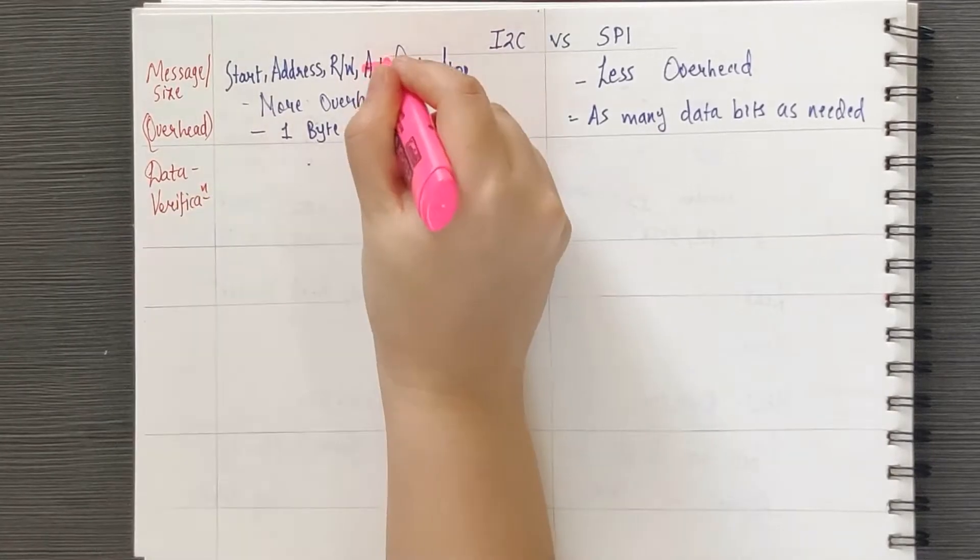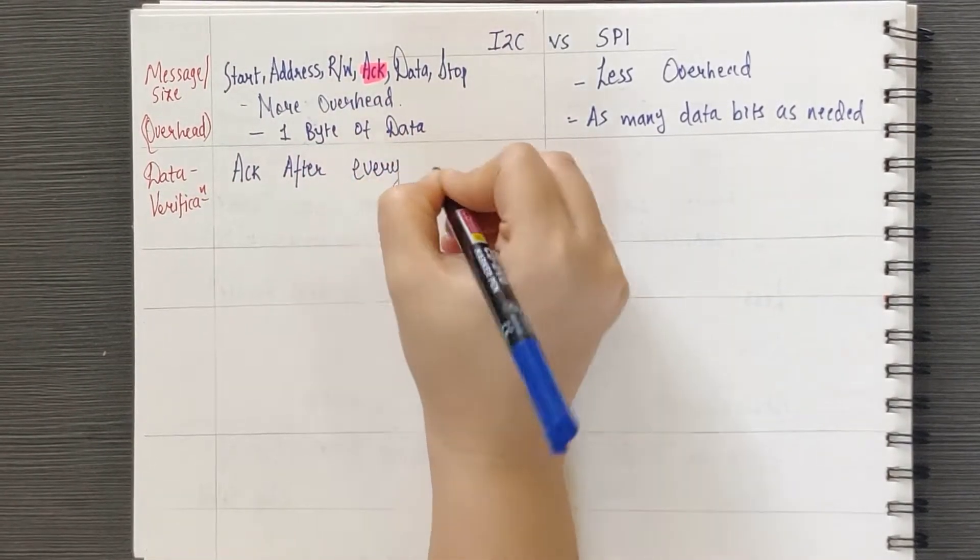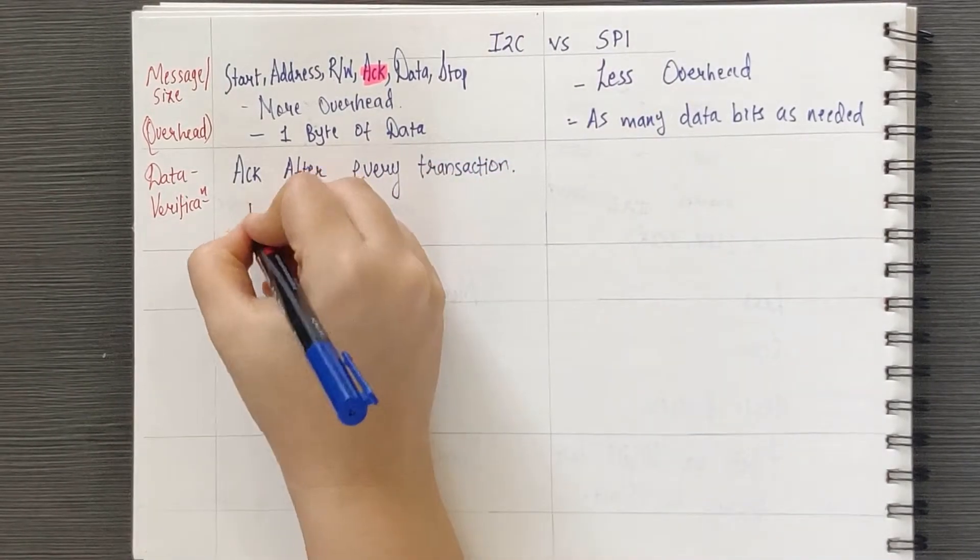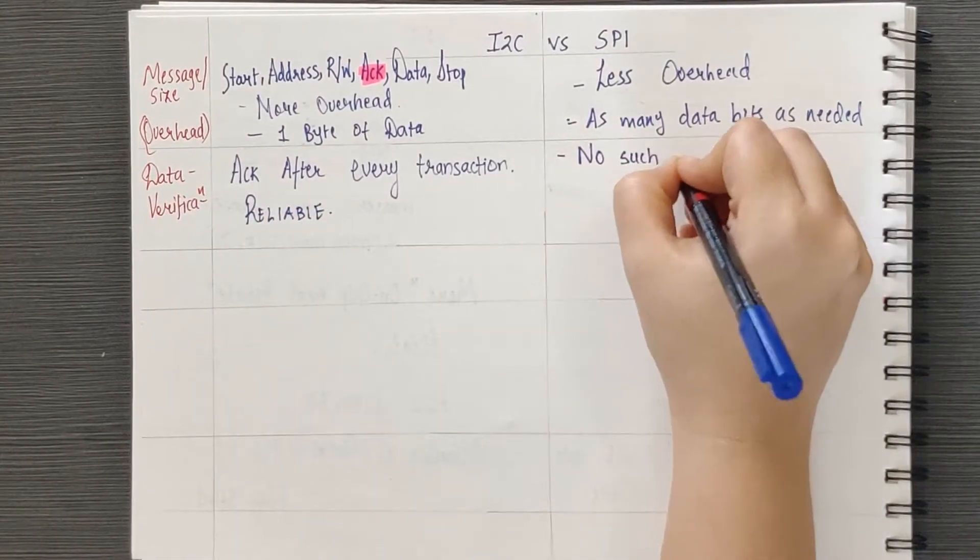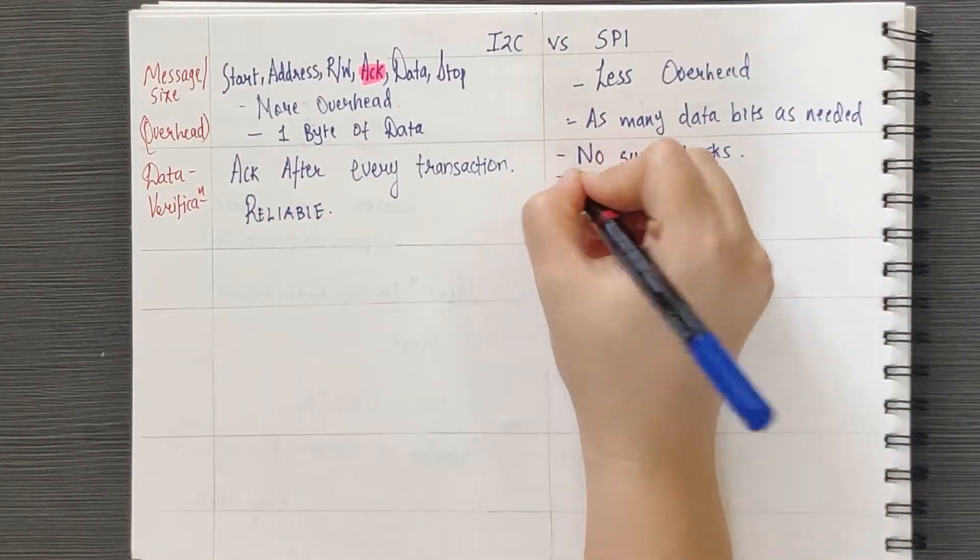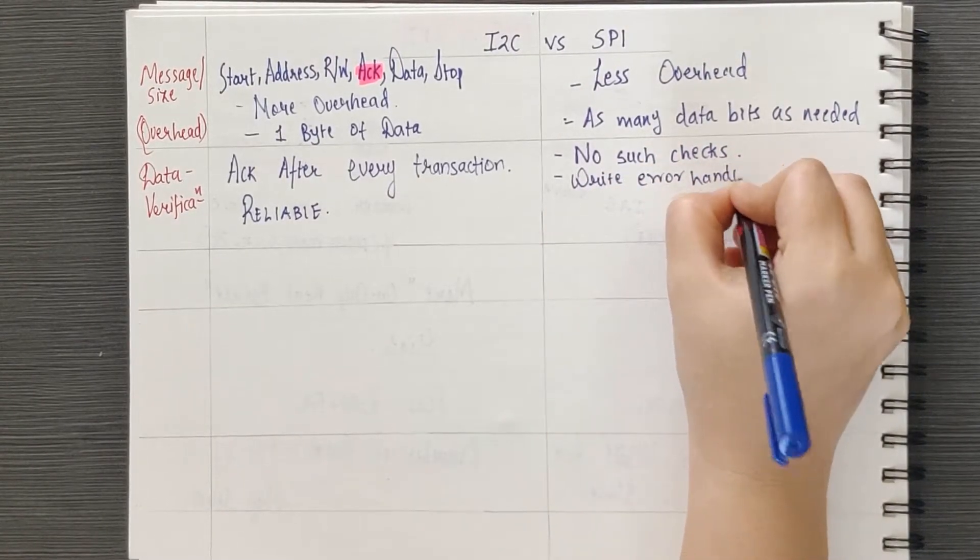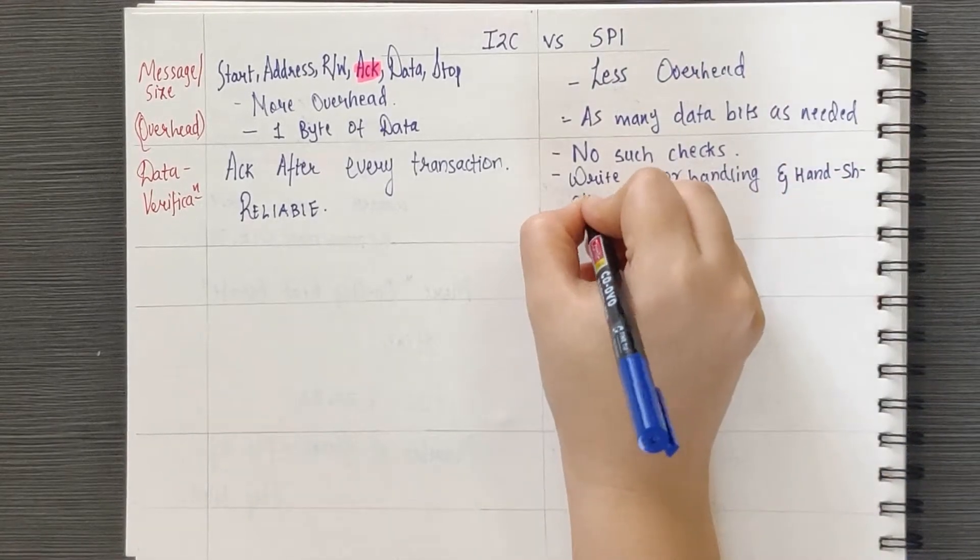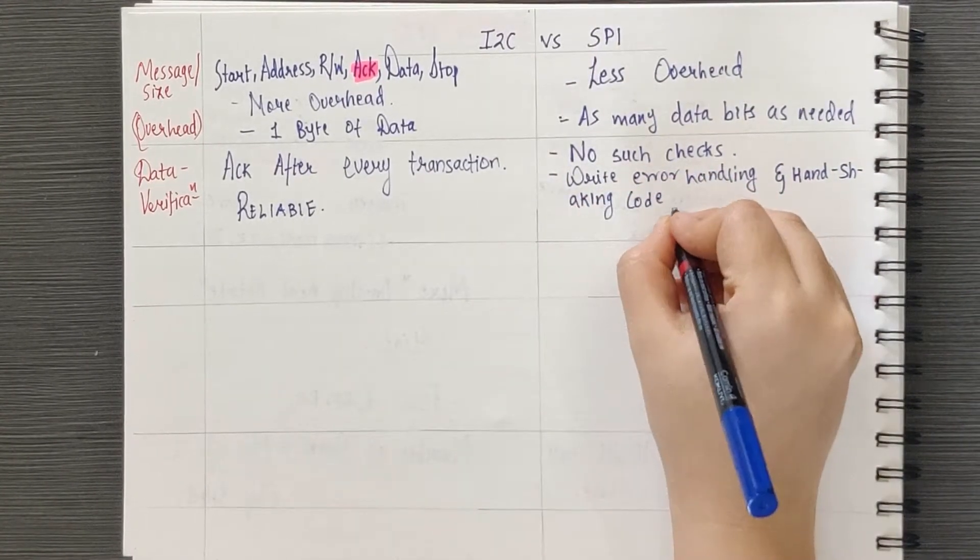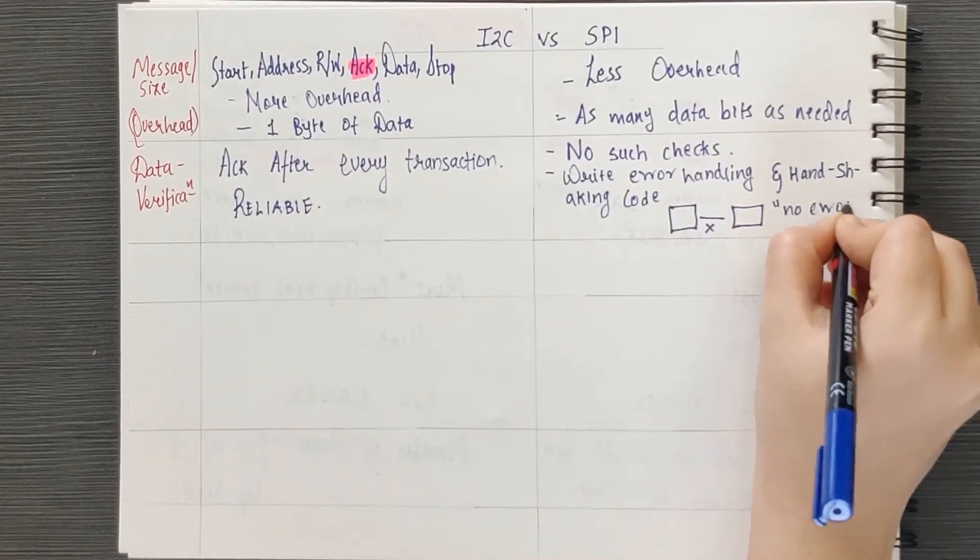Now let's consider the acknowledgement bit. The acknowledgement bit is sent after every transaction in I2C, which makes it more reliable. SPI doesn't have that feature inherently included. What you gain in the simplified electronics in SPI, you lose on the software. You need to write your own error handling and handshaking code since there is no way of knowing if the slave received the messages sent to it, nor is there any error checking in the protocol itself.